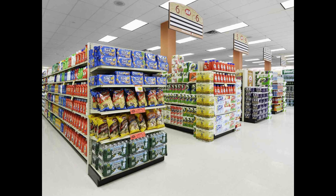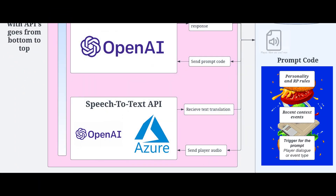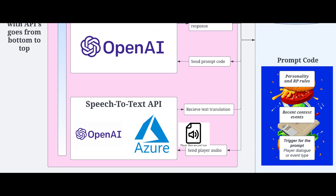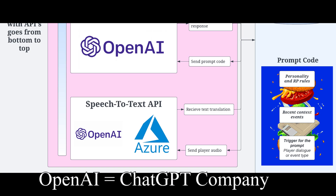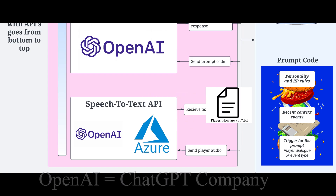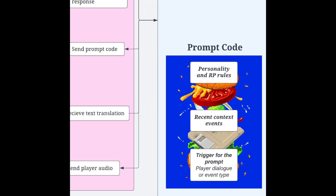The first API we need to use is a speech-to-text API, as the audio file we recorded is not exactly useful to us right now. So we send this audio file to a speech-to-text API — in this case it's either OpenAI or Azure currently — and then you receive a text file translation of what has been said.